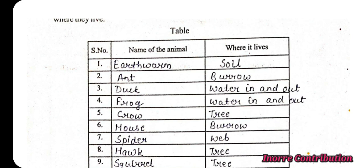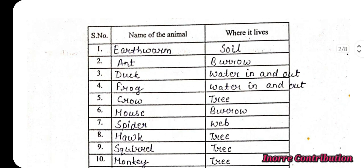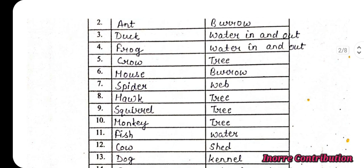Ant lives in a burrow. Duck lives both in water and on land. Frog also lives both in water and on land. Crow lives on trees. Mouse lives in a burrow. Spider lives in a web. Hawk lives on trees. Squirrel lives on trees. Monkey lives on trees. Fish lives in water.